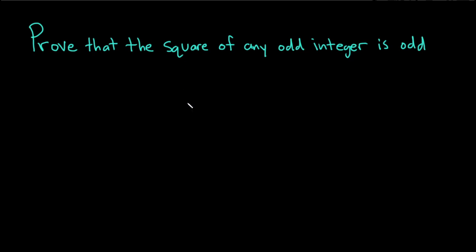Prove that the square of any odd integer is odd. So before we do the proof, we need the definition of an odd integer.